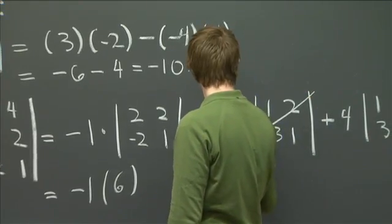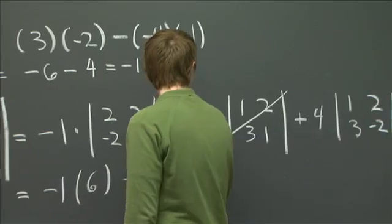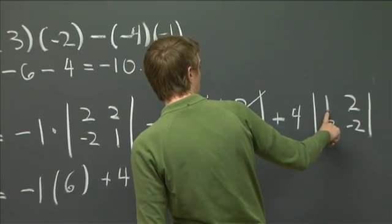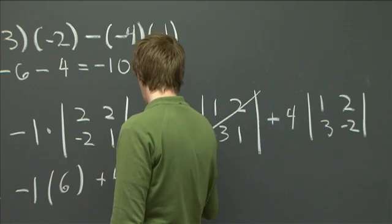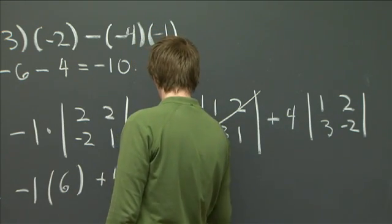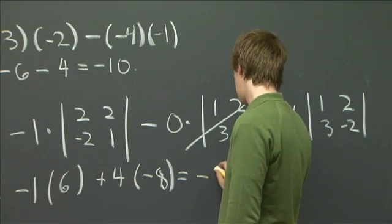This one goes away. And then we have plus 4 times. We have minus 2 minus another 6. So it looks to me like minus 8. Altogether, we have minus 38.